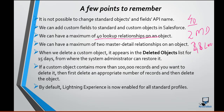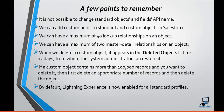If an object does not have any master detail relationship, you can create 40 lookup relationships. If it already has one master detail relationship, you can only create 39 lookup relationships, because the total number of relationships is 40. Also remember, we can have a maximum of two master detail relationships on an object.